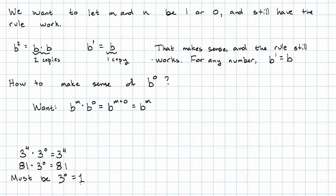It must be that three to the zero is one. Let's try another example. Five to the third times five to the zero is five to the third. That is 125 times five to the zero is 125. Okay, so it must be that five to the zero also equals one.